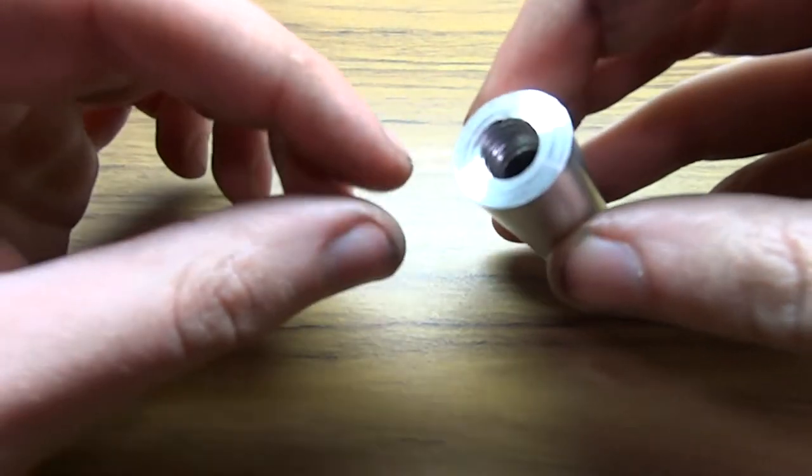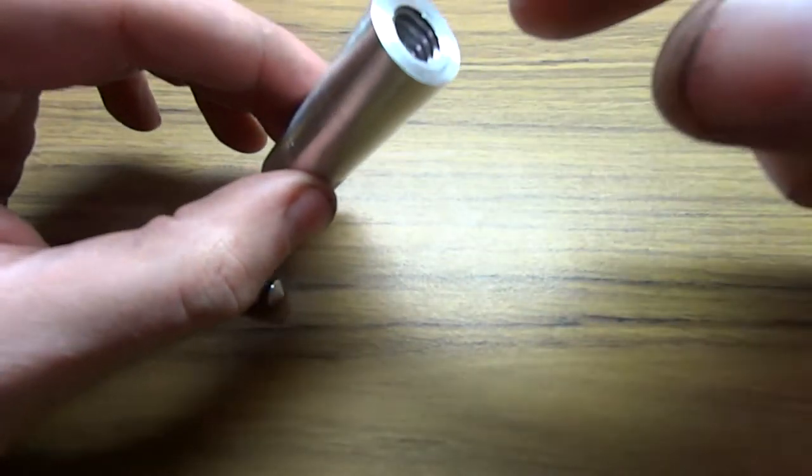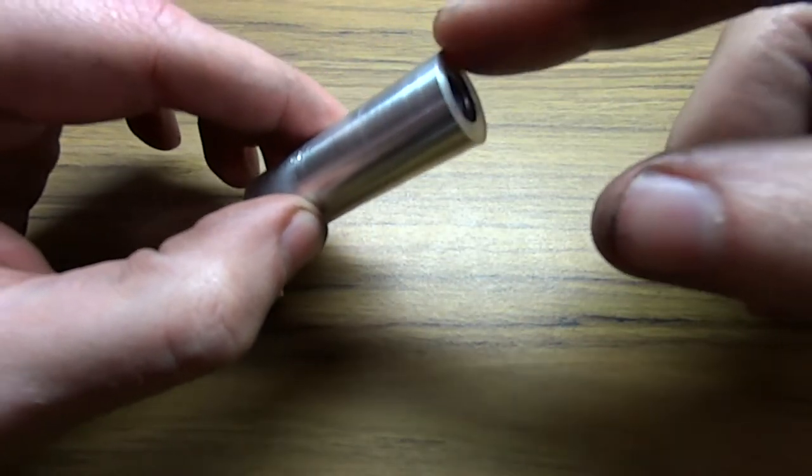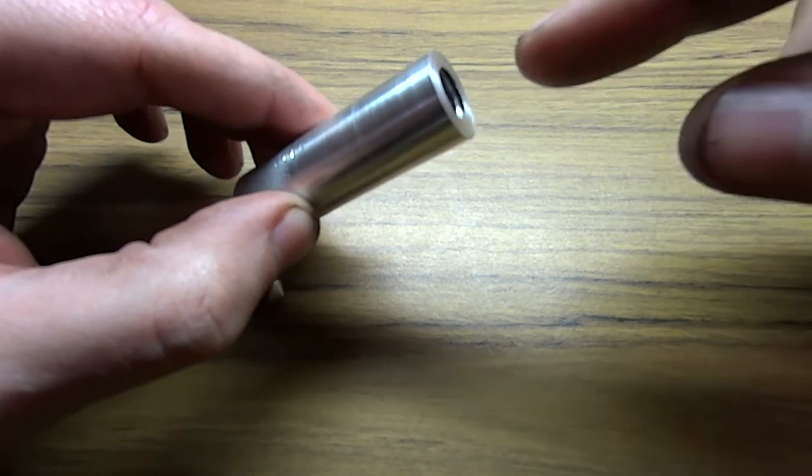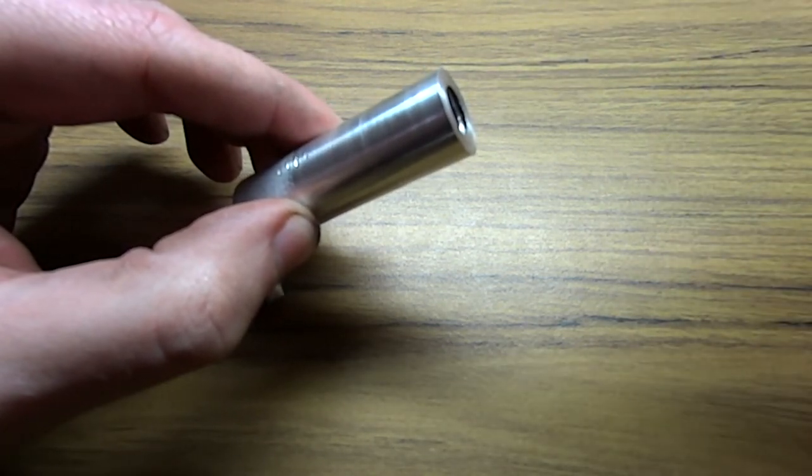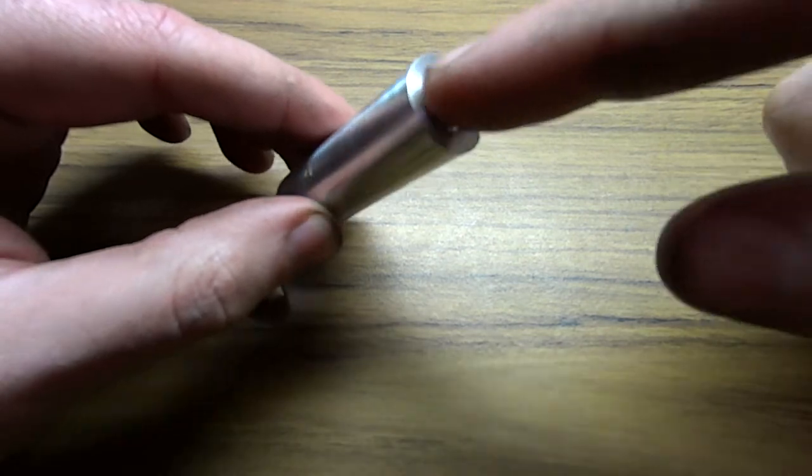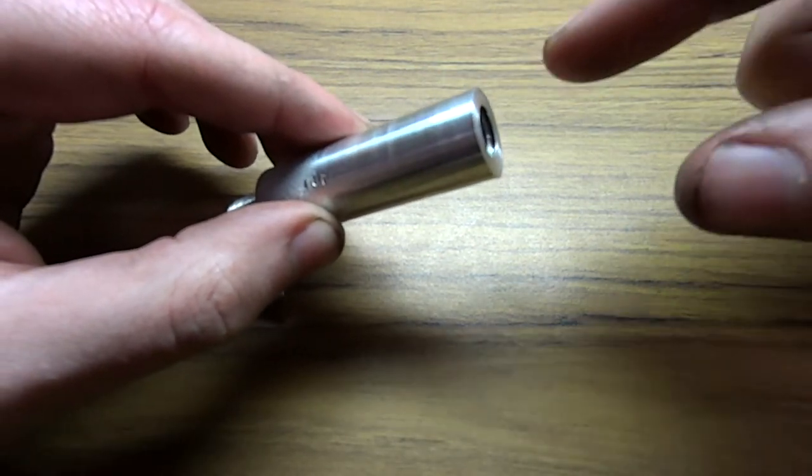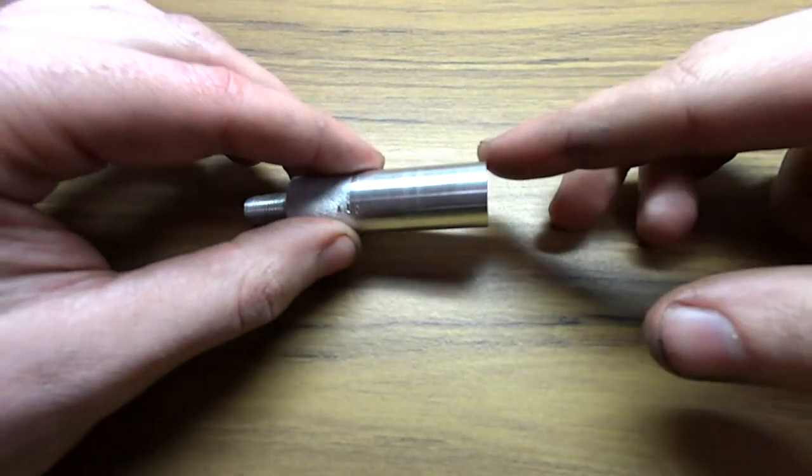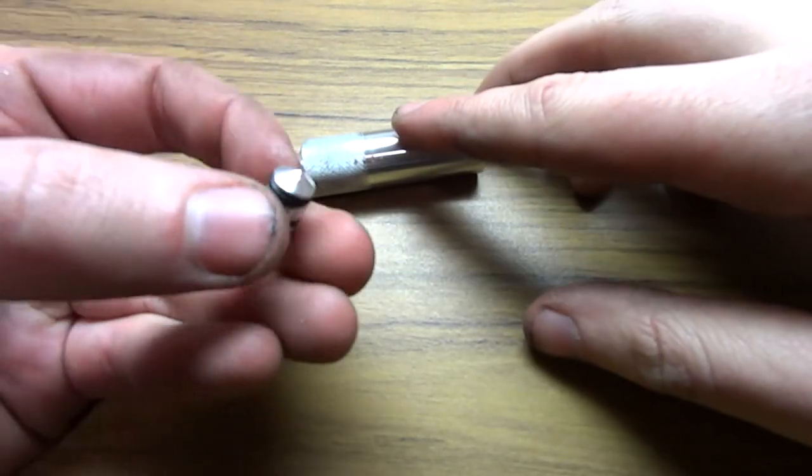It's threaded on the end here internally so that I can have a bolt in there, and then that bolt is also threaded. There is another bolt that goes through this larger bolt, and that bolt, the smaller one, adjusts this little piece here.